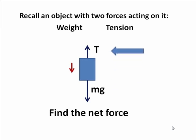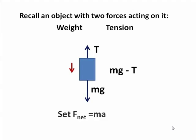We write this down: Mg minus T, there's the net force. Now, the net force is always set equal to Ma. And so our equation becomes Mg minus T equals Ma.